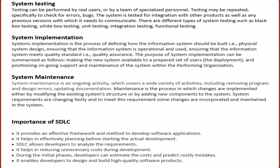Systems implementation is the process of defining how the information system should be built, i.e., physical system design, ensuring that the information system is operational and used, and ensuring that the information system meets quality standards, i.e., quality assurance. Its purpose includes making the new system available to a prepared set of users, and handling deployment, positioning, ongoing support, and maintenance within the performing organization.